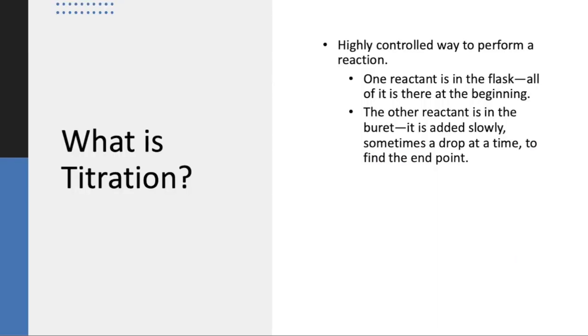The experiment is about titration, which is a highly controlled way to perform a reaction. Normally, this is performed where you have one reactant in the flask, and in our case, that's going to be the acid. And then another reactant is in a tool called a burette. You don't have burettes in your kit, so you're actually going to be using a syringe for this purpose. So you can add the base one drop at a time. And by doing this, you're going to be able to see the end point of the titration when the indicator changes color.